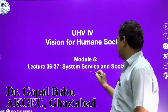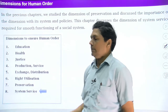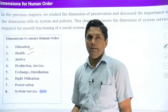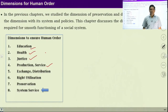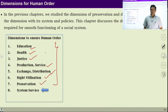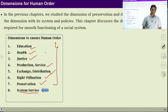Basically in this lecture we are going to study system service and social services. In the previous classes we have studied all these dimensions — dimension of education, dimension of health, dimension of justice, dimension of production service, dimension of exchange distribution, right utilization and preservation. All these dimensions we have studied till now, and we noticed that the dimension of education is very important because all these dimensions are interconnected. Today we are going to study the last dimension of human order, that is system service.